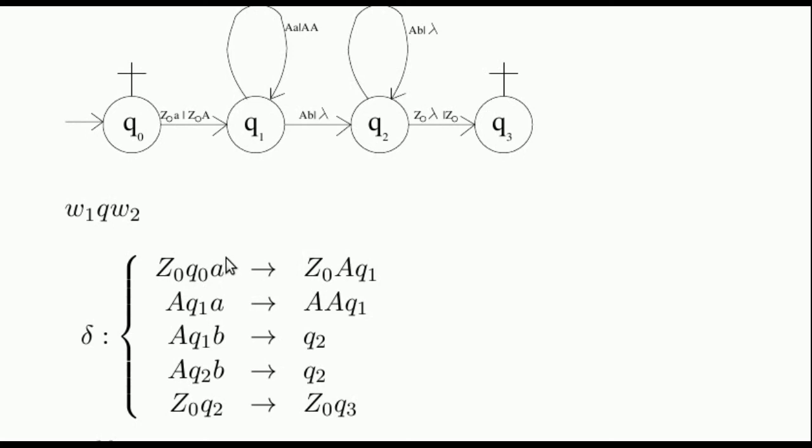Given the stack's top symbol, the current state, and the symbol read from the input, we denote what is written at the stack's top and which state is reached.